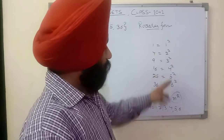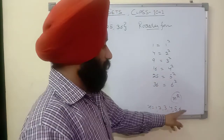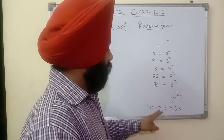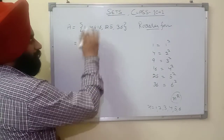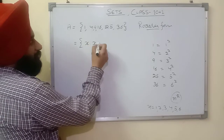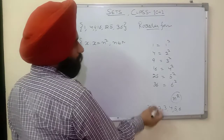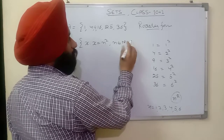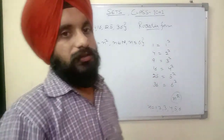These elements are represented by x such that x = n², where n is a natural number and n ≤ 6. This is the set builder form: A = {x | x = n², n ∈ ℕ, n ≤ 6}.